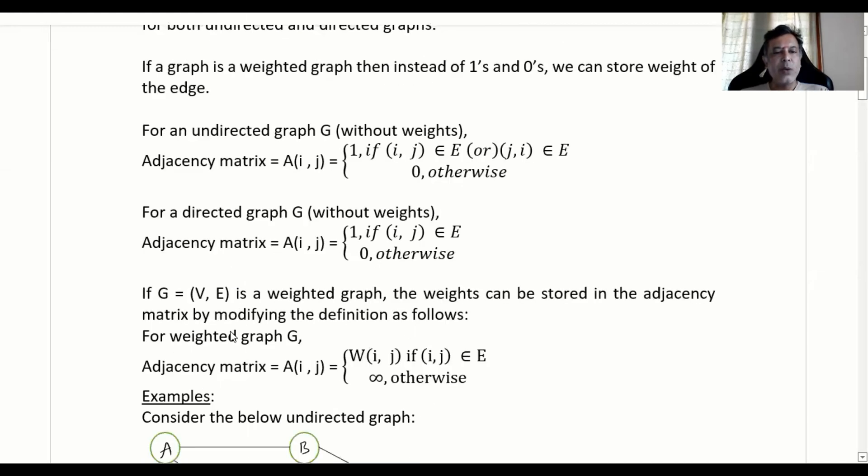If G = (V, E) is a weighted graph then the weights can be stored in the adjacency matrix by modifying the definition as follows: For weighted graph G the adjacency matrix will be A[i,j] where A[i,j] will have w[i,j] which will be the weight in the ith row and jth column if (i, j) belongs to edge set E. Otherwise we will put infinity in that particular element space.